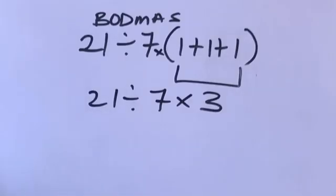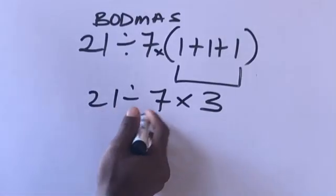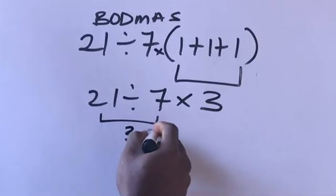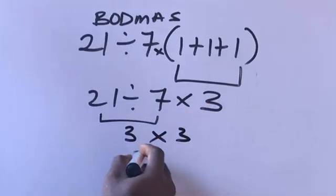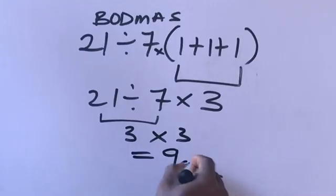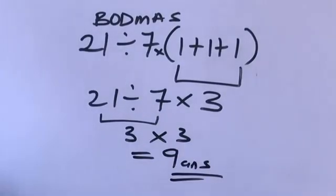do 21 divide by 7, which will give us 3, times this 3, which is equal to 9. So our final answer is 9.